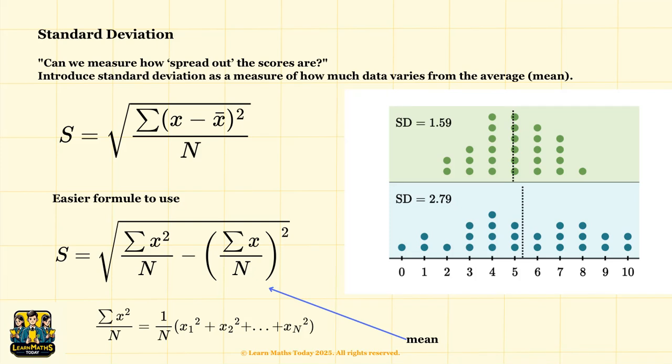Have you ever seen a group of runners running a race and finishing close together, whereas in another race some runners might finish at very different times? That's exactly what standard deviation helps us understand. It helps us measure how spread out the data points are on average.